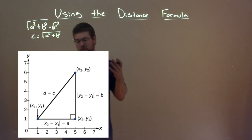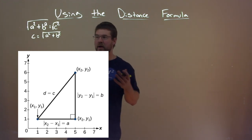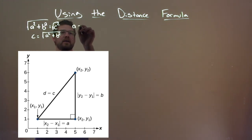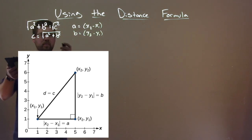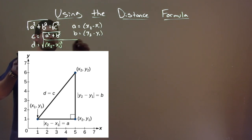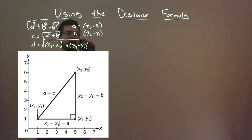And then with a being the difference between x and y, or sorry, the two x values. So if a is the difference between x, or x2 minus x1, and b is equal to the difference between y2 minus y1, we kind of plug that in here. And our c value being the distance between the points, so we call that d now, is equal to the square root of x2 minus x1 squared, there's the a value, plus y2 minus y1 squared, and that's the b value. And there is our distance formula.